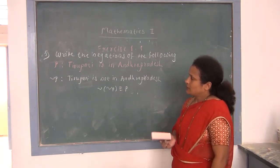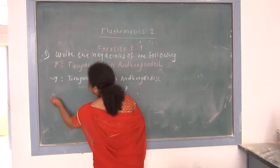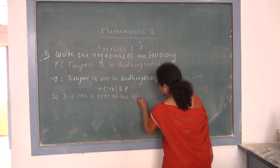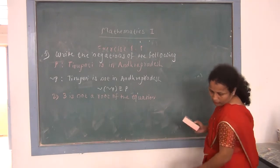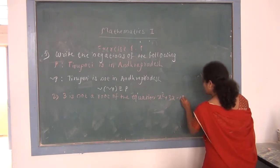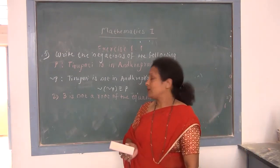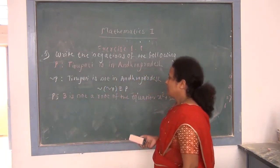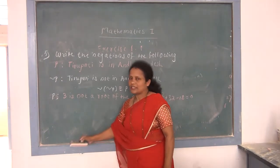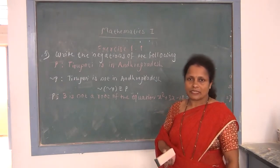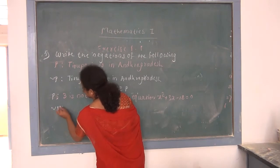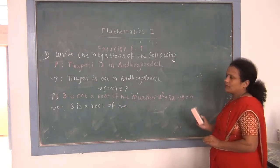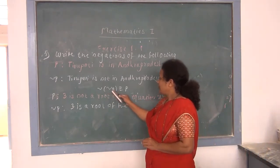Second: '3 is not a root of the equation x² + 3x − 18 = 0.' Taking its negation (¬P), we remove the 'not': '3 is a root of the equation x² + 3x − 18 = 0.' Note that the negation of ¬P equals P itself.